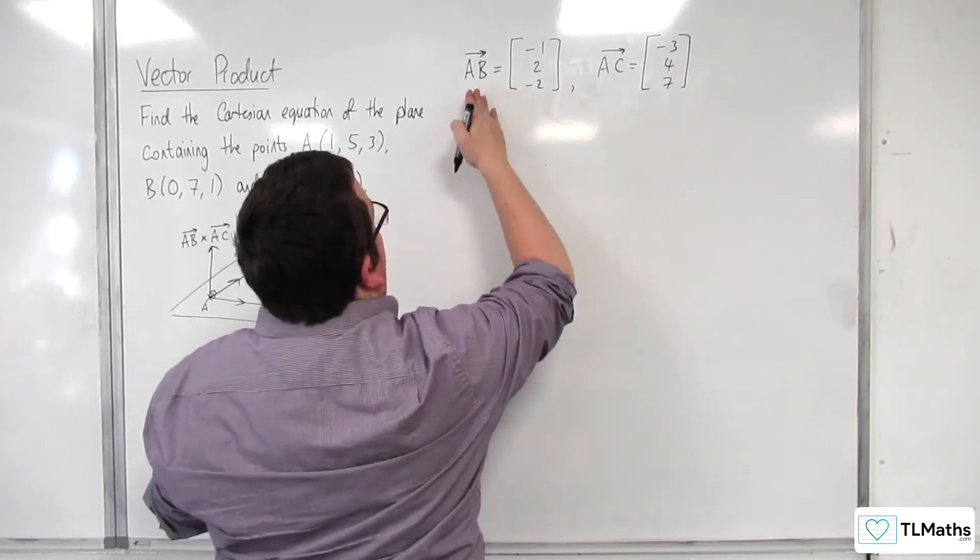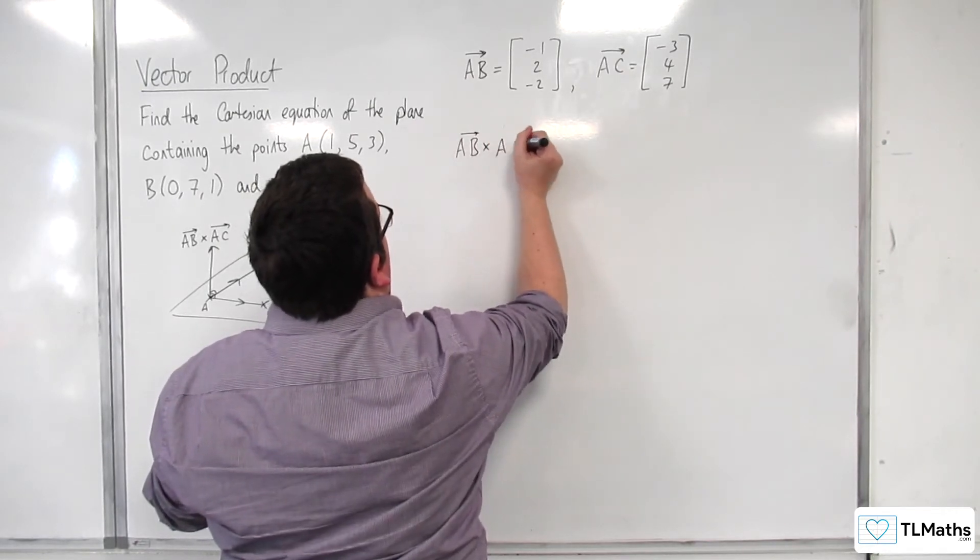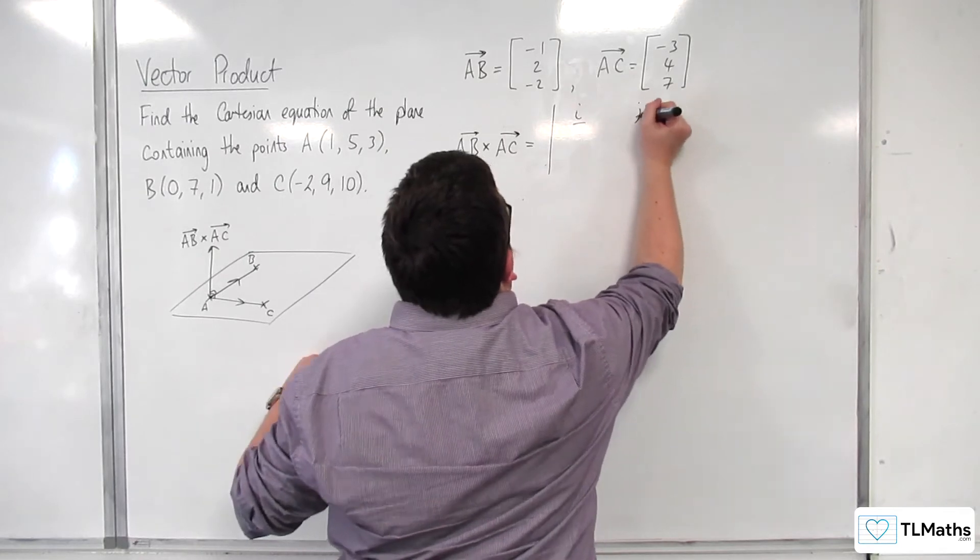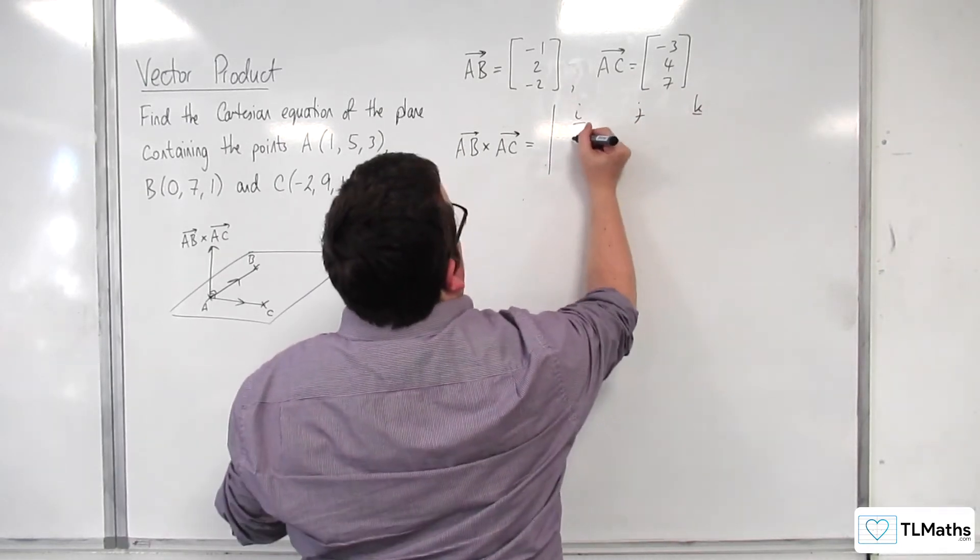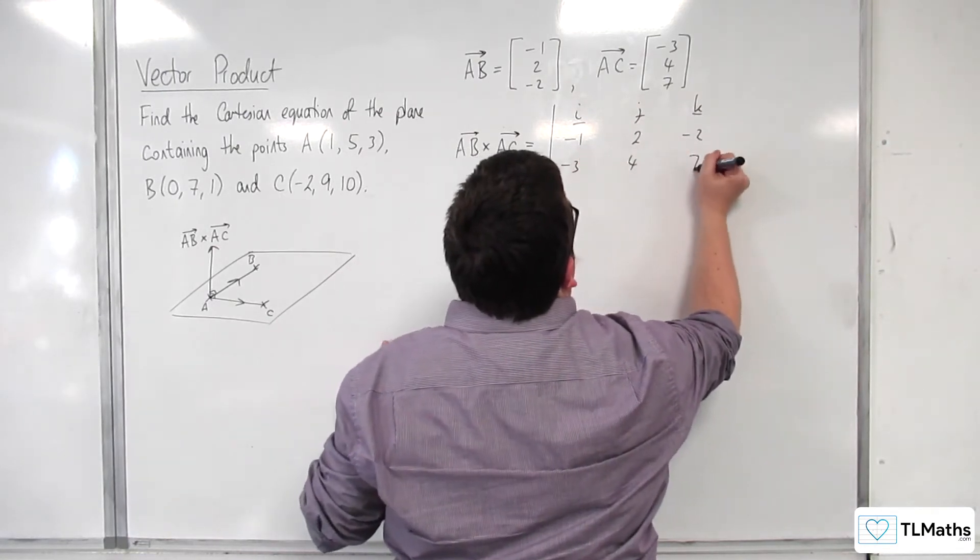I then need to find the vector product between these two. So AB cross with AC is going to be the determinant of this matrix. So minus 1, 2, minus 2, minus 3, 4, 7.